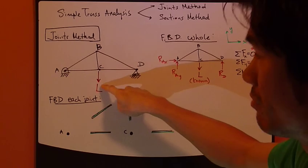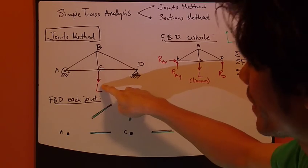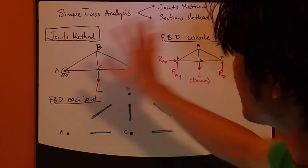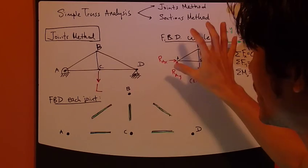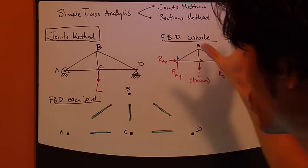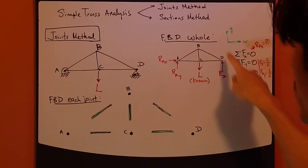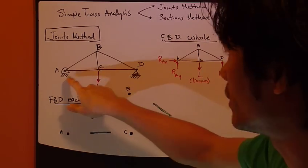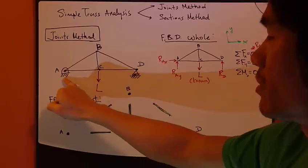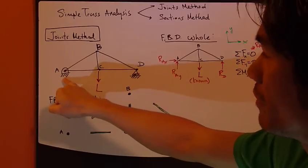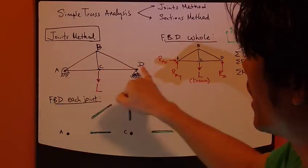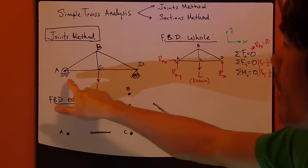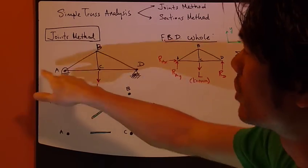There's an applied load pointing down in the middle, at joint C. We'll call it L — L is a known quantity, it's a force. The first thing to do is draw a free body diagram for the entire truss. We draw the truss and label everything, but don't draw the attachments. The attachment on the left is a pin joint, and the one on the right is a roller.